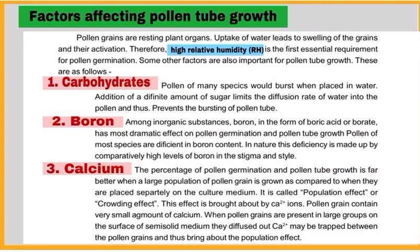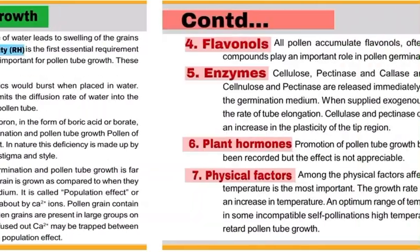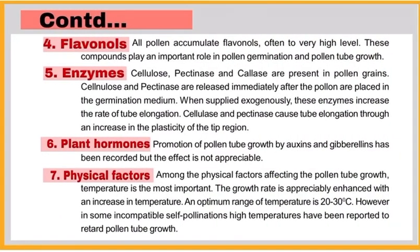Now write about factors affecting pollen tube growth, like it depends upon the presence of carbohydrates, boron, calcium, flavonols, enzymes, plant hormones, and also upon certain physical factors like temperature and relative humidity.